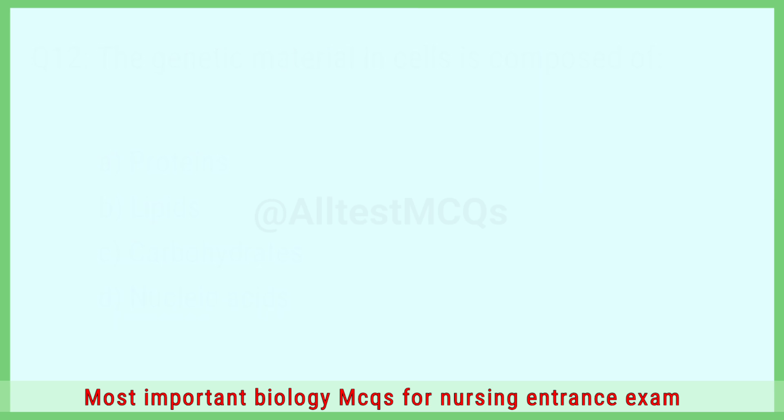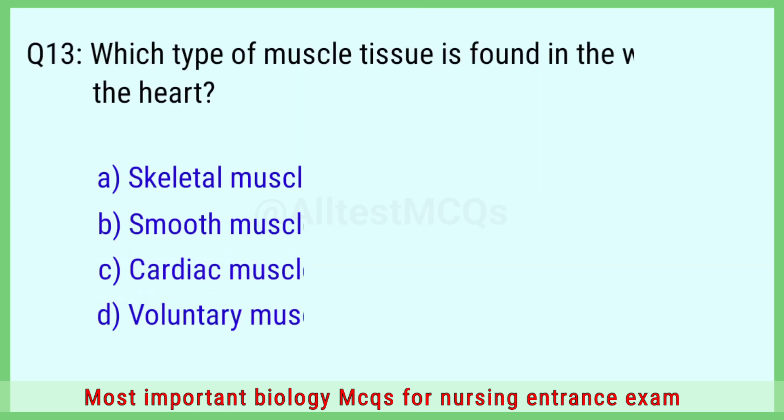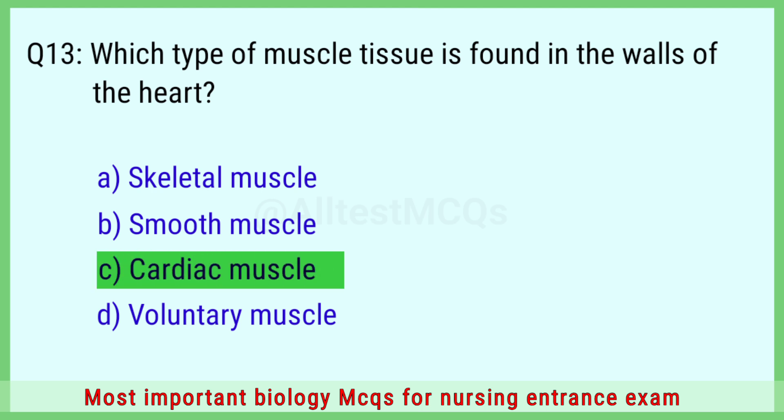Question number 13: Which type of muscle tissue is found in the walls of the heart? The right answer is option C: cardiac muscle.